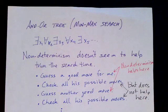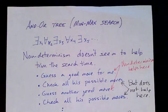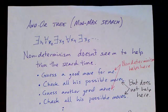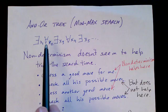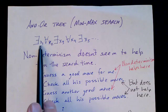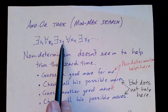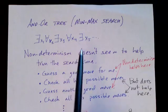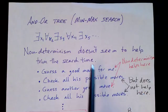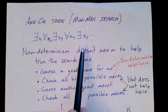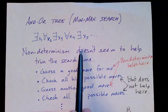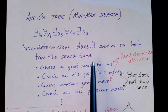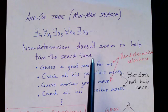What we're getting at is that these problems seem to require exponential time on any machine, and the non-determinism somehow doesn't help. This problem of the guessing game is a special case of the min-max search problem, or AND-OR tree search problem. The nature of it is a formula: there exists an x such that for all x2, there exists an x3 such that for all x4. This is the min-max search problem, and it's used in game theory. Let's say you're playing a game like chess or checkers. You want to know whether this move or that move is good. Non-determinism doesn't really seem to help trim the search time. You just have to do the full search.